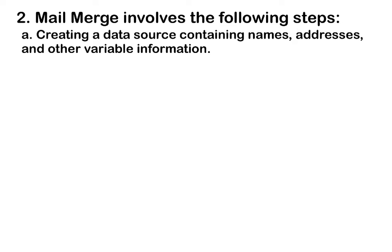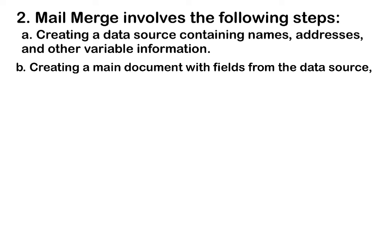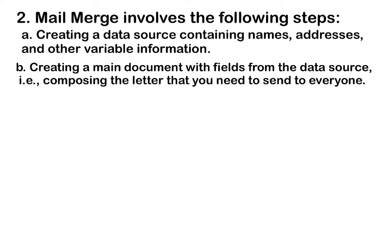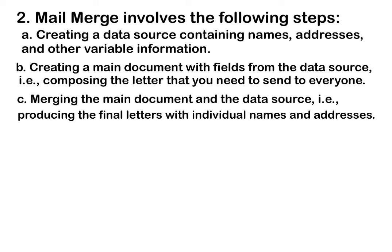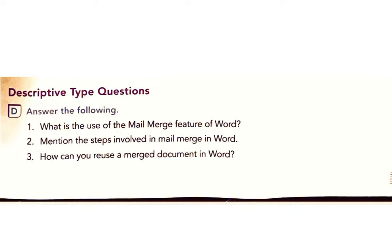B: Mention the steps involved in mail merge in Word. Answer: Mail merge involves the following steps: A) Creating a data source containing names, addresses, and other variable information. B) Creating a main document with fields from the data source, i.e., composing the letter that you need to send to everyone. C) Merging the main document and the data source, i.e., producing the final letters with individual names and addresses.